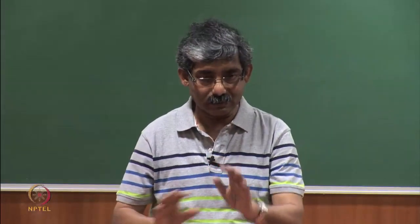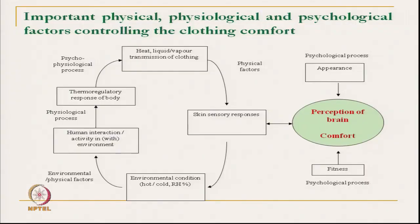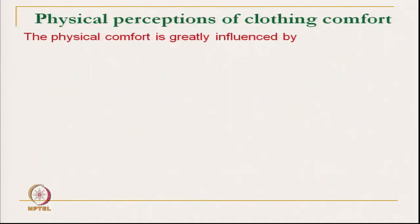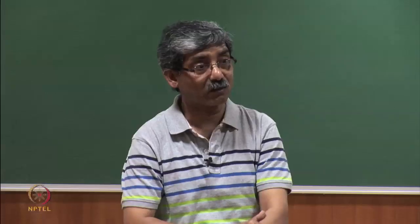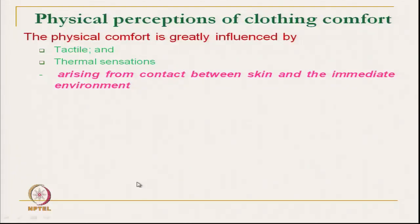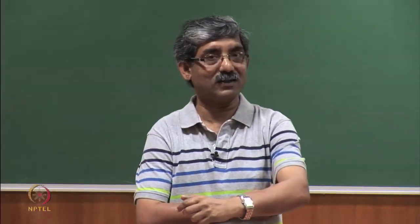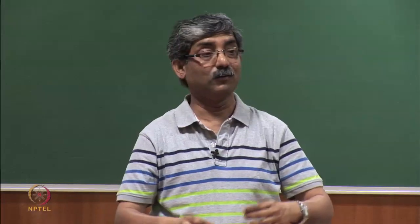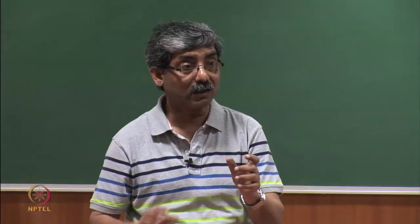In this segment, we will discuss all these aspects — how to evaluate this psychological sensation. Physical perception of clothing comfort is generally influenced by tactile (touch-related) and thermal sensation. These arise from contact with the clothing. When our body is in contact with the fabric, we get two types of physical sensation: touch-related sensation and thermal-related sensation, whether it is warm or cool.